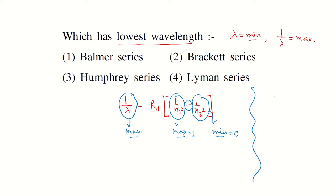Now if you calculate, 1 divided by n1 square equals 1 means n1 equals 1, and 1 divided by n2 square equals 0 when n2 equals infinity. That means the electron comes from infinite distance to n equals 1. That means the series is Lyman series.